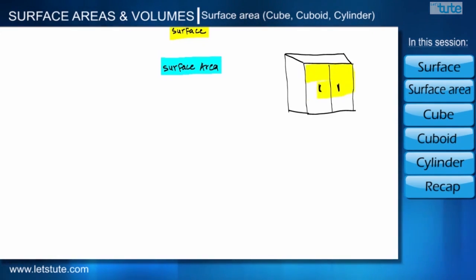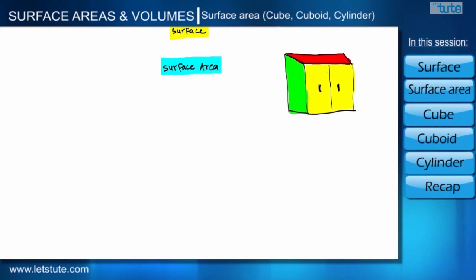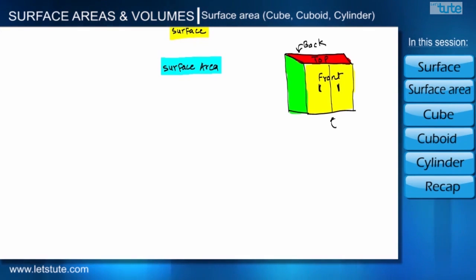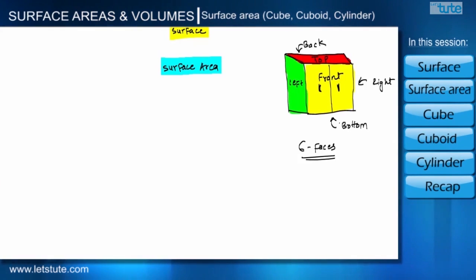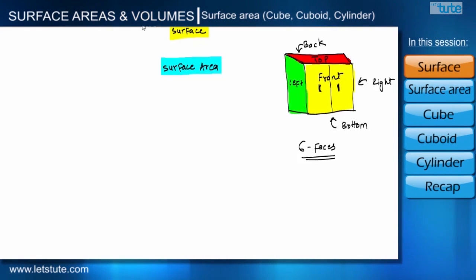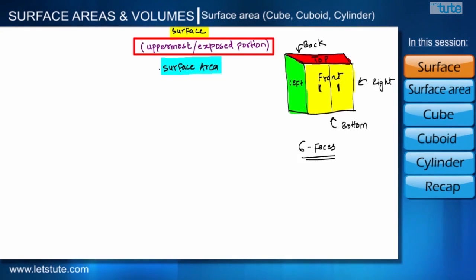Suppose we have a cupboard and we want to paint this cupboard from outside. The total portion of this cupboard which we can paint from outside is the surface of this cupboard. We have painted this cupboard from six sides: front and back, top and bottom, left side and right side — total six faces painted from outside, and all these faces are called the surface of this cupboard.